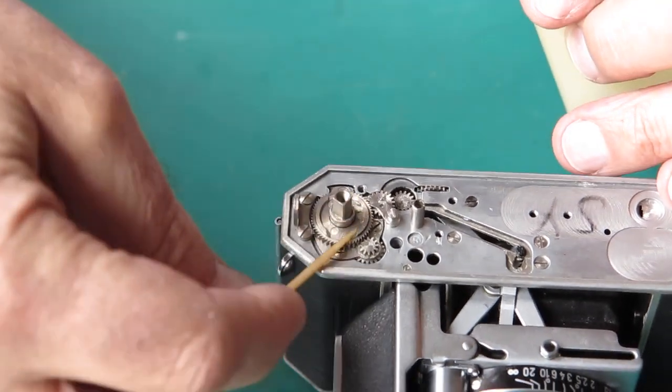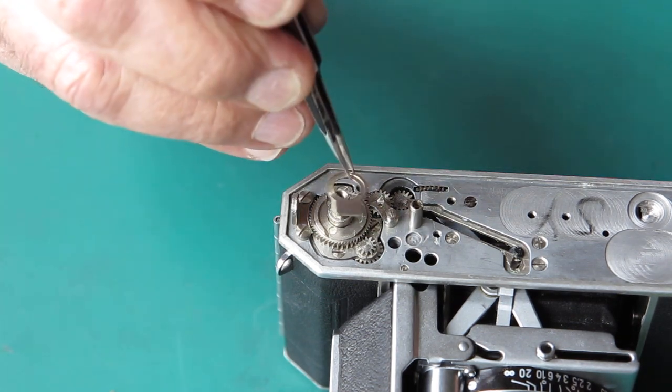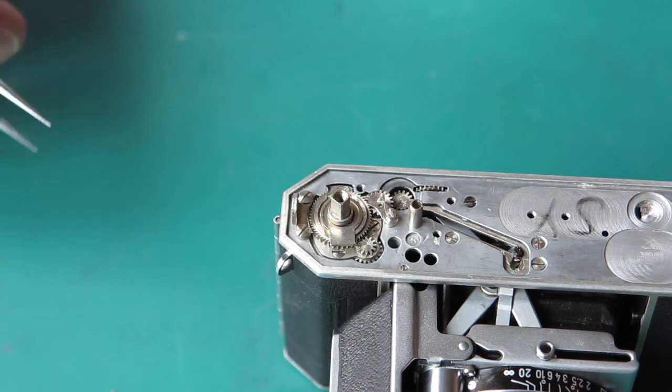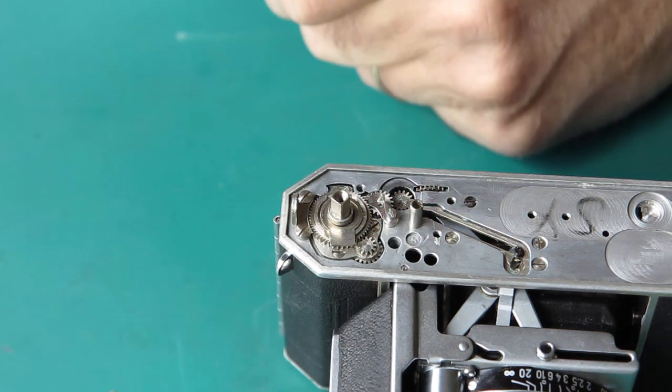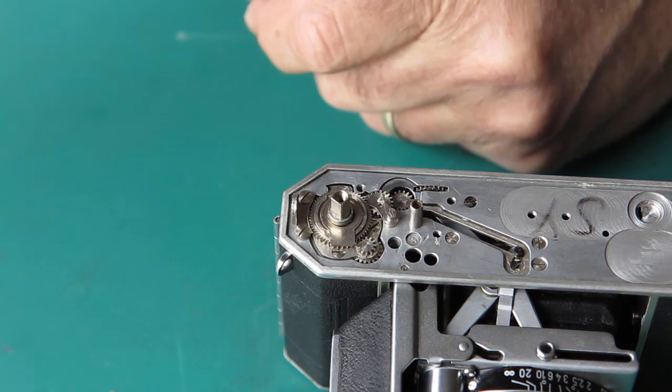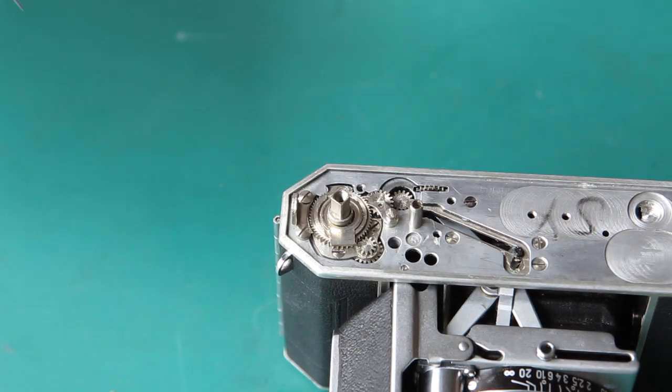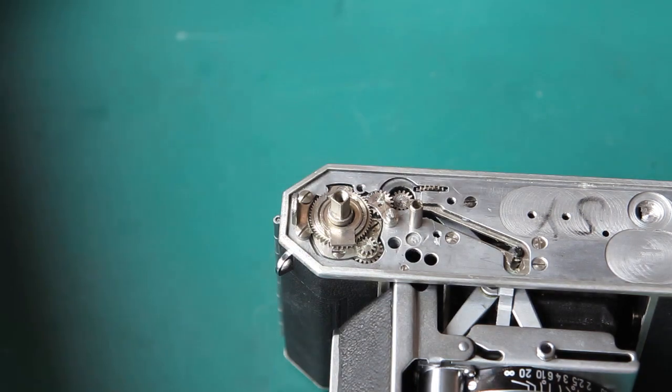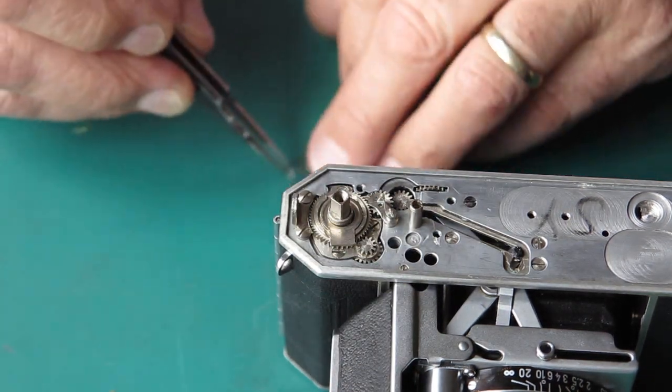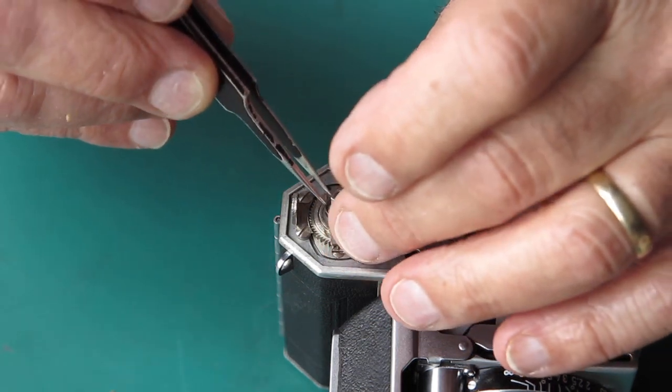Usually I would give this a very light wipe with a bit of synthetic grease. There's the drive dog that drives our cocking action. It drives the whole film advance actually. And the spring. And the spring goes from the top of that. It sits on there.